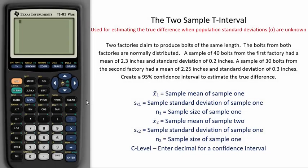The two-sample t-interval is used for estimating the true difference between two means when population standard deviations sigma are unknown. To find it on the TI calculator,